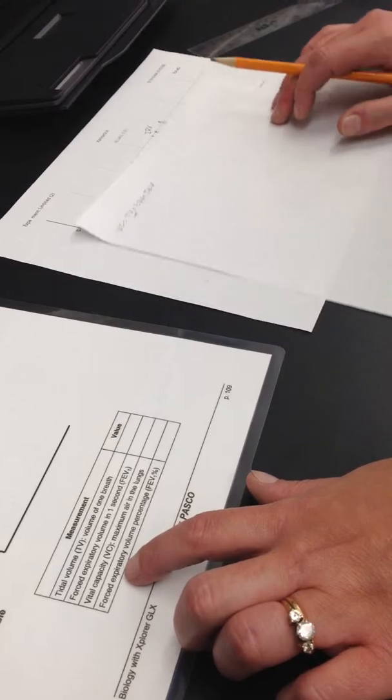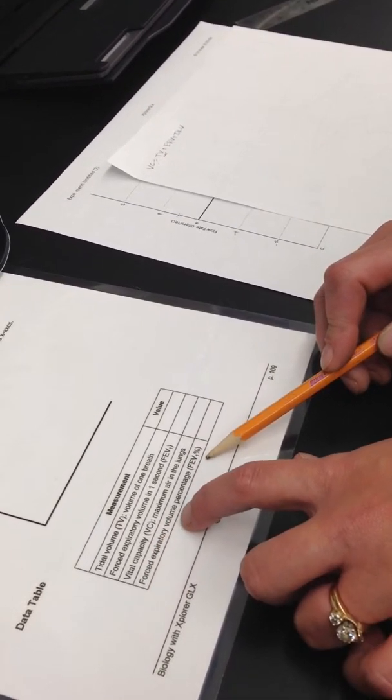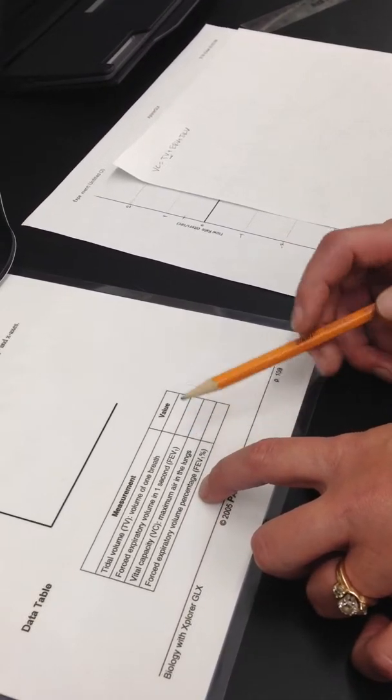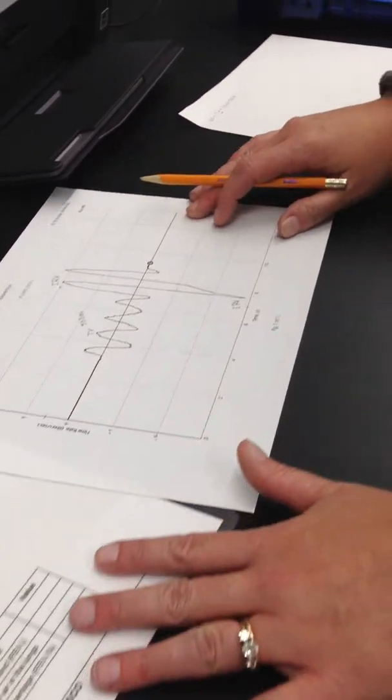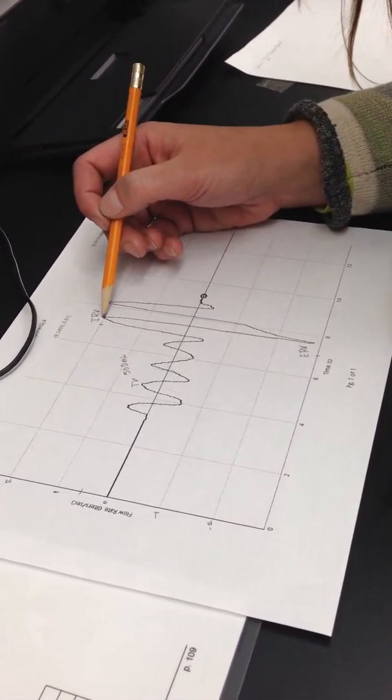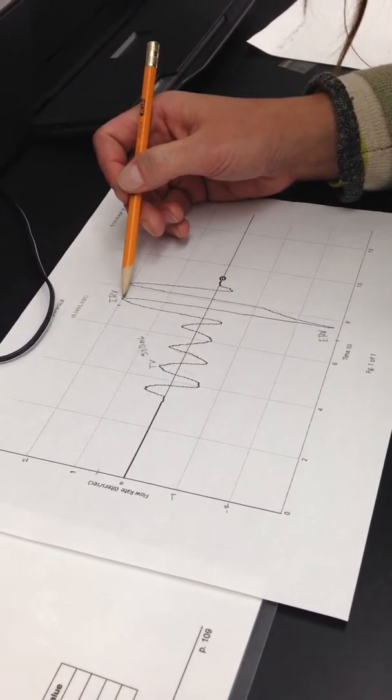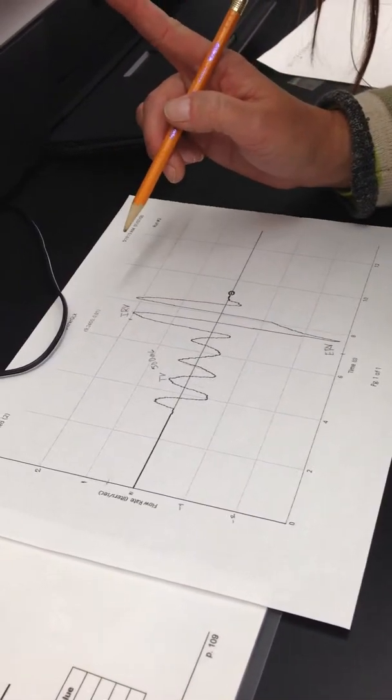Finally, it will ask you to calculate the percentage of your forced expiratory volume percent. What that is, is the amount of air, after you take a deep breath and you're going to forcefully exhale, it is the total amount of air that you can breathe out in one second.